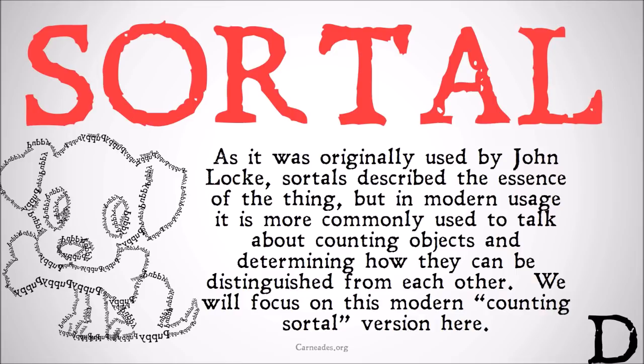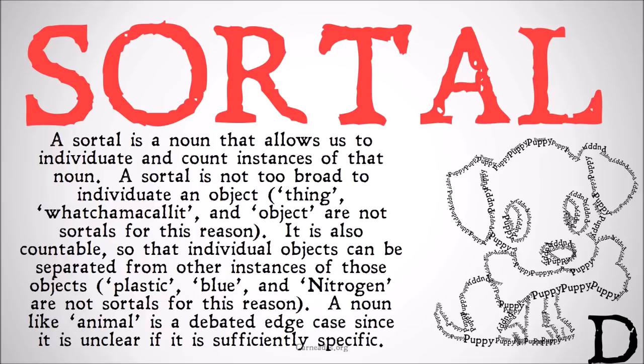A sortal is just a noun that allows us to individuate and count instances of that noun. A sortal is not too broad to individuate an object — terms like 'thing,' 'whatchamacallit,' or 'object' wouldn't be sortals for this reason, because they're too broad. We don't have enough specifics to tell what exactly you're counting as a thing, whatchamacallit, or object.